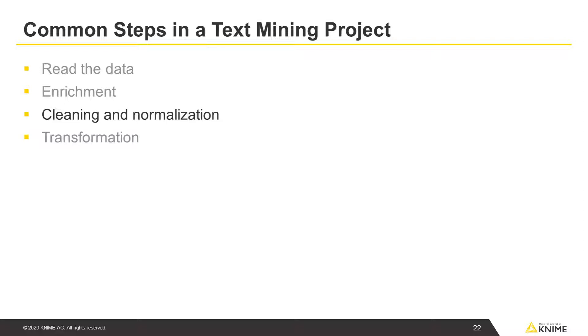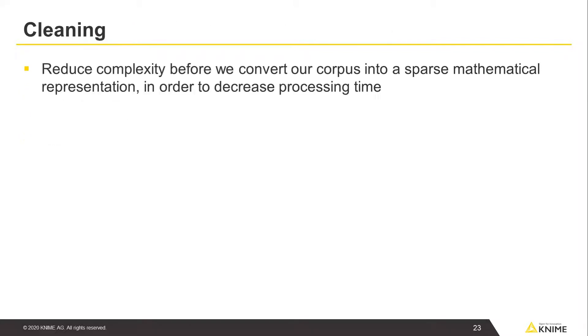The aim of the next step is to reduce the number of different tokens in the document corpus, by both deleting unnecessary tokens and normalizing the tokens. Ultimately, we want to reduce complexity before we convert our corpus into a sparse mathematical representation in order to decrease processing time later on.